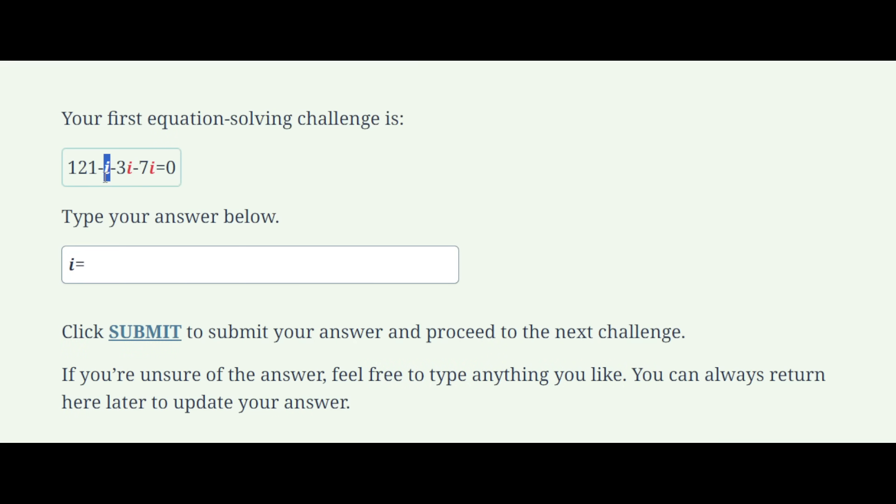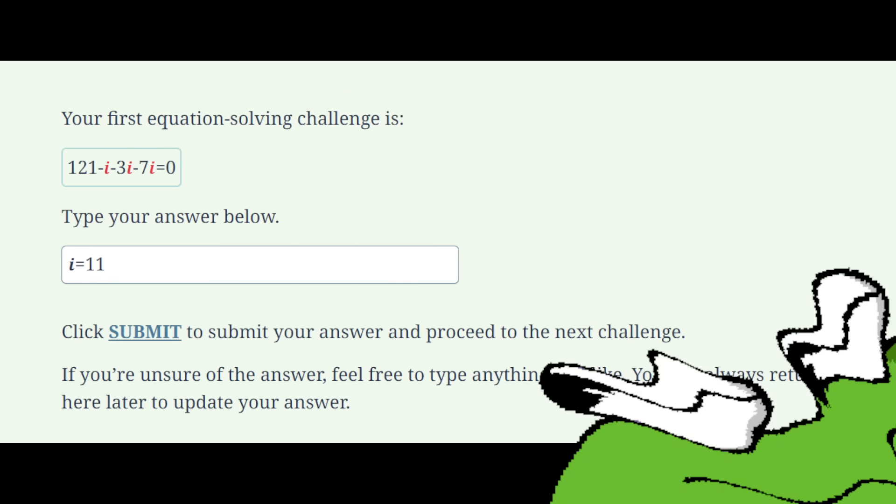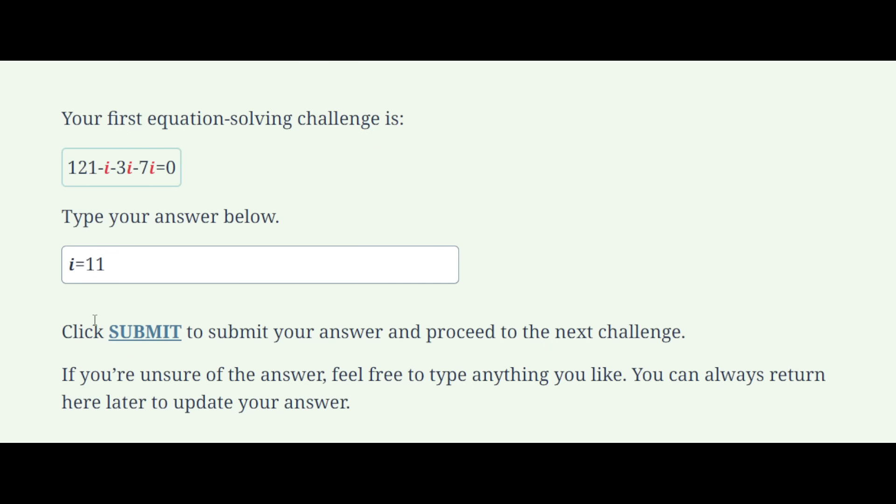So our first equation solving challenge, okay, you're going to use i, even though that's the imaginary unit. Okay, but this goes to 11, right? It's 11 times 11 is 121, like I know this. And these negative i's combine together to make 11. However, you can always return here later to update your answer. That's just some suspicious stuff.